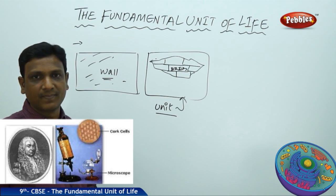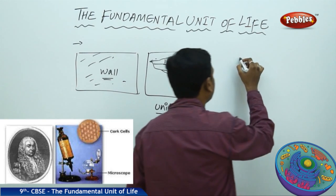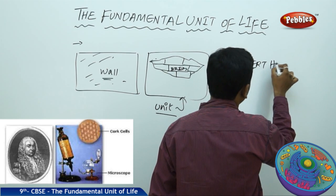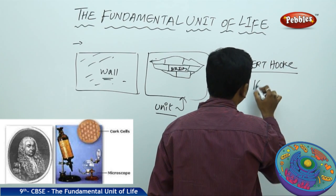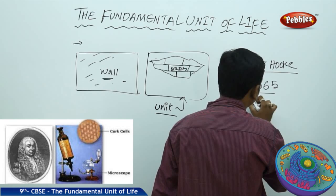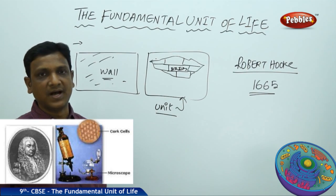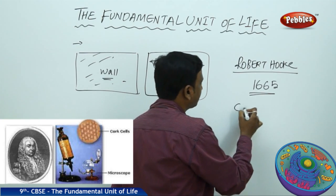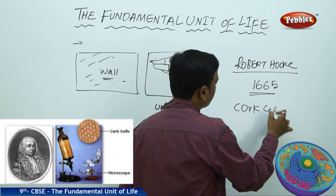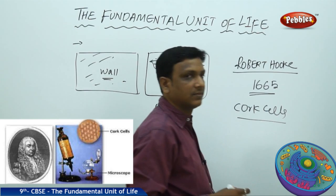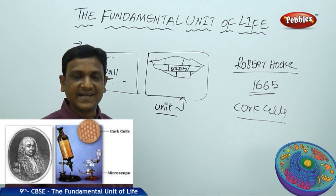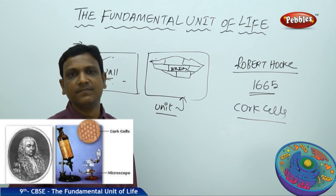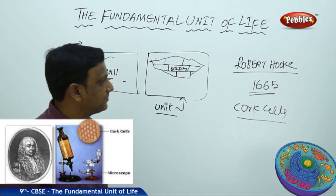This was observed by a person called Robert Hooke. In the year 1665, Robert Hooke observed a section of living things — a section of dead cork cells. Cork is nothing but wood, dead dried-up wood. He took a very thin section of the wood and observed that section under a microscope.